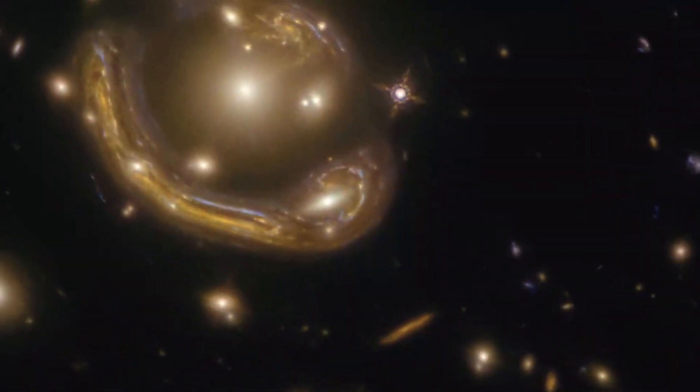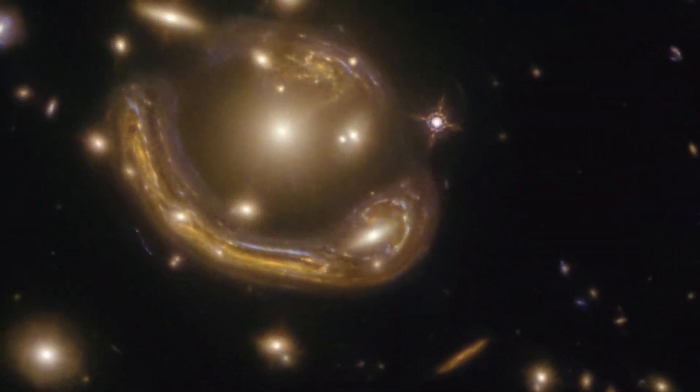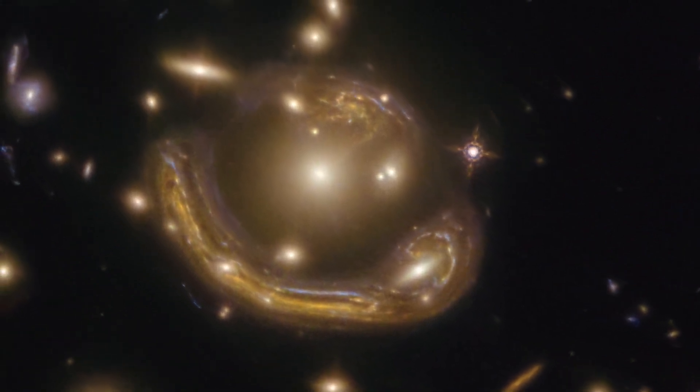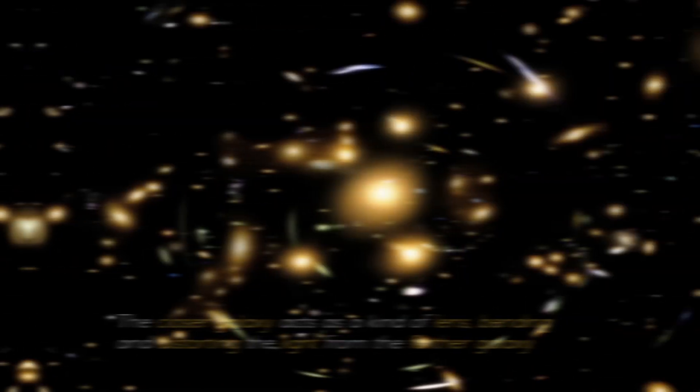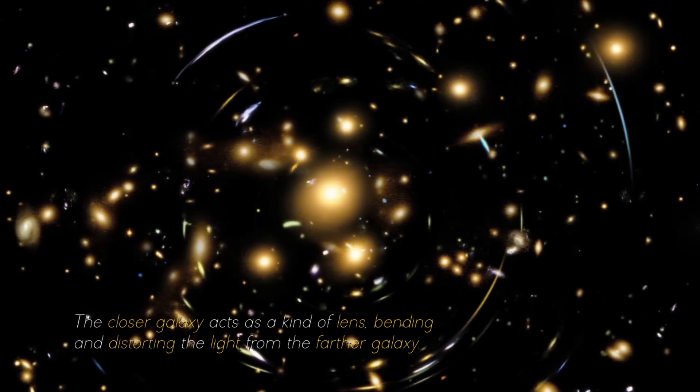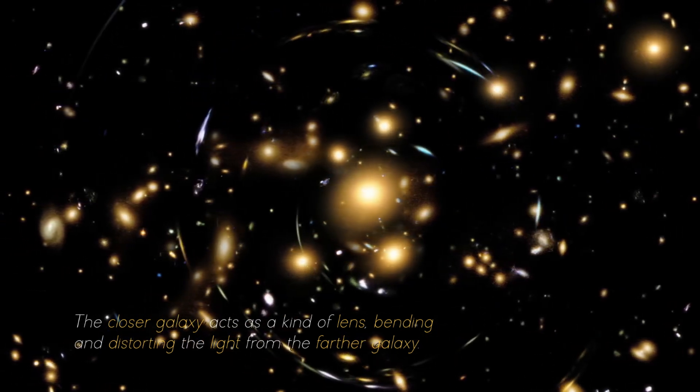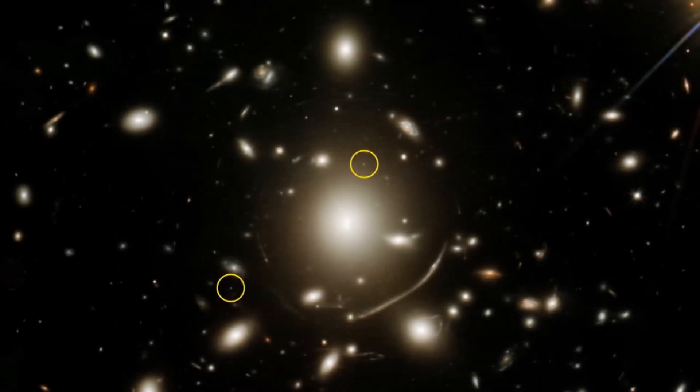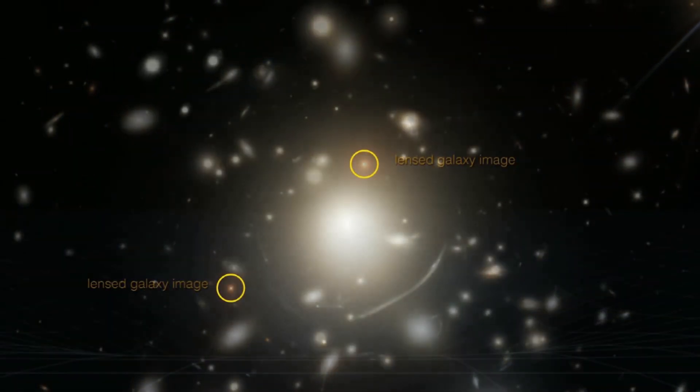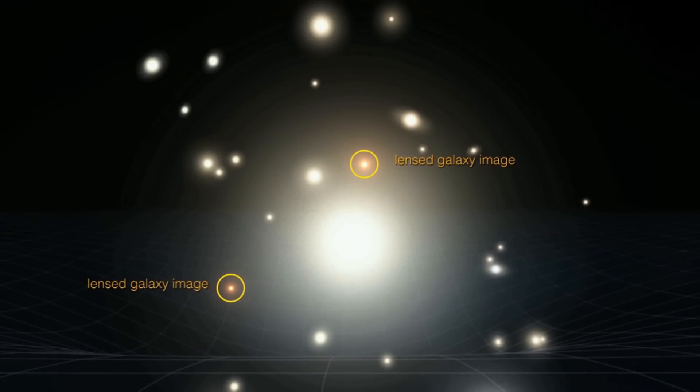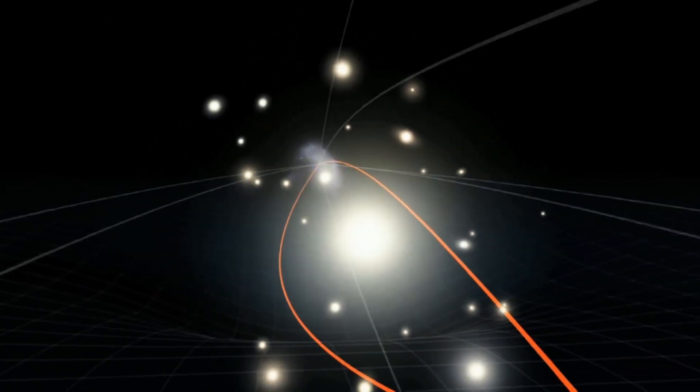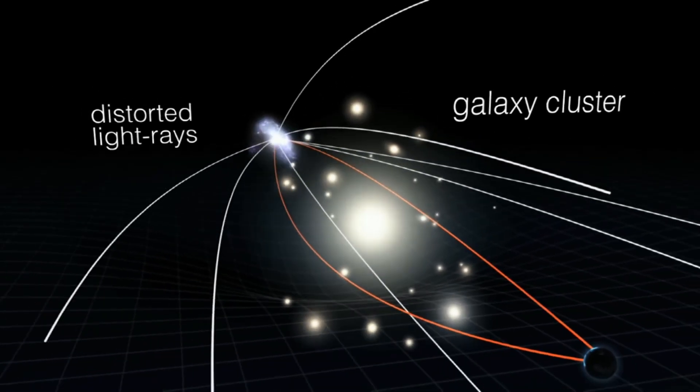Imagine that you have two galaxies lined up in our line of sight. One is closer to us, and the other is further away. The closer galaxy acts as a kind of lens, bending and distorting the light from the farther galaxy. How the light from the distant galaxy is distorted, amplified, or even split into multiple images depends on factors such as the mass, distance, and alignment of these two galaxies.